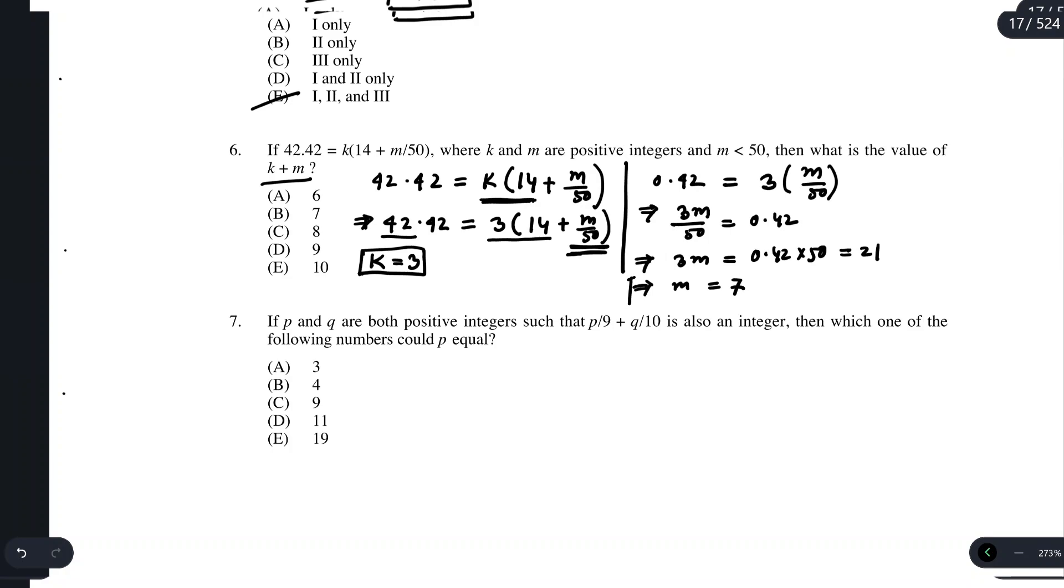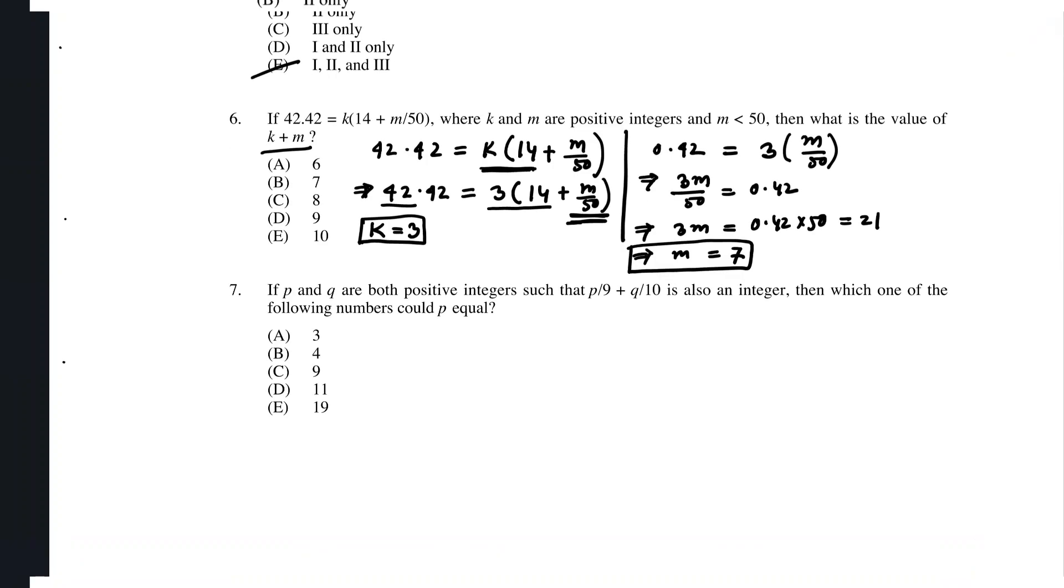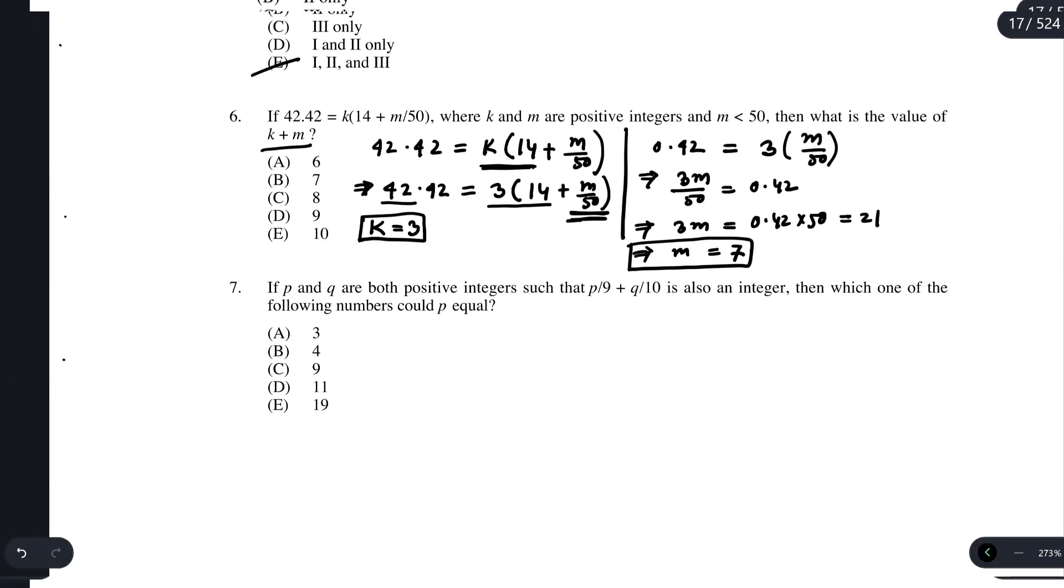We have the value for k, we have the value for m. Now we know that the value for k plus m should equal 3 plus 7, which equals 10. So the answer for problem number 6 should be option e.